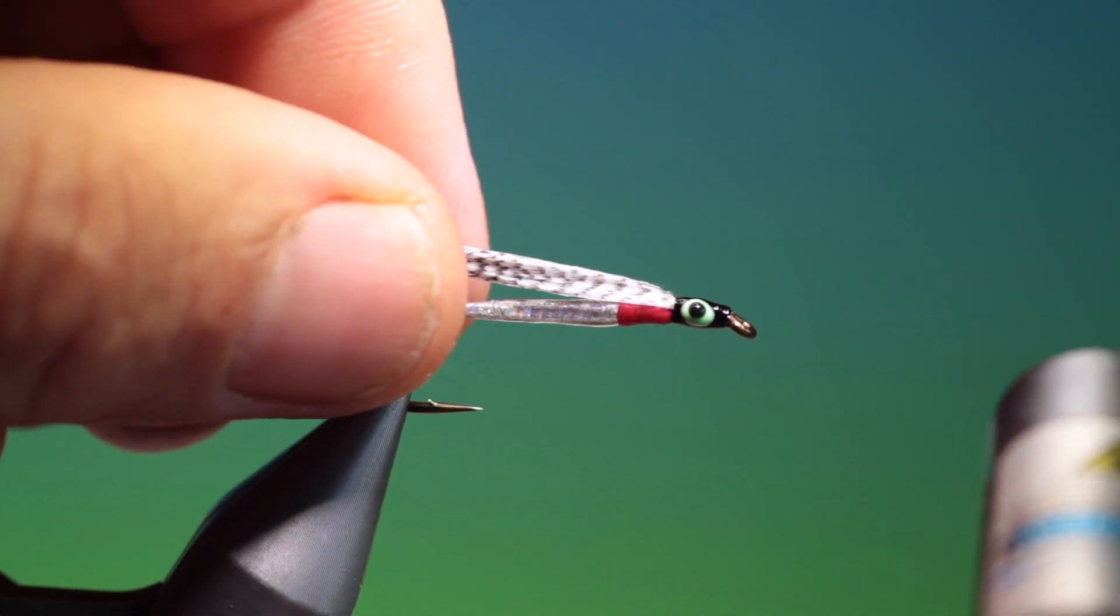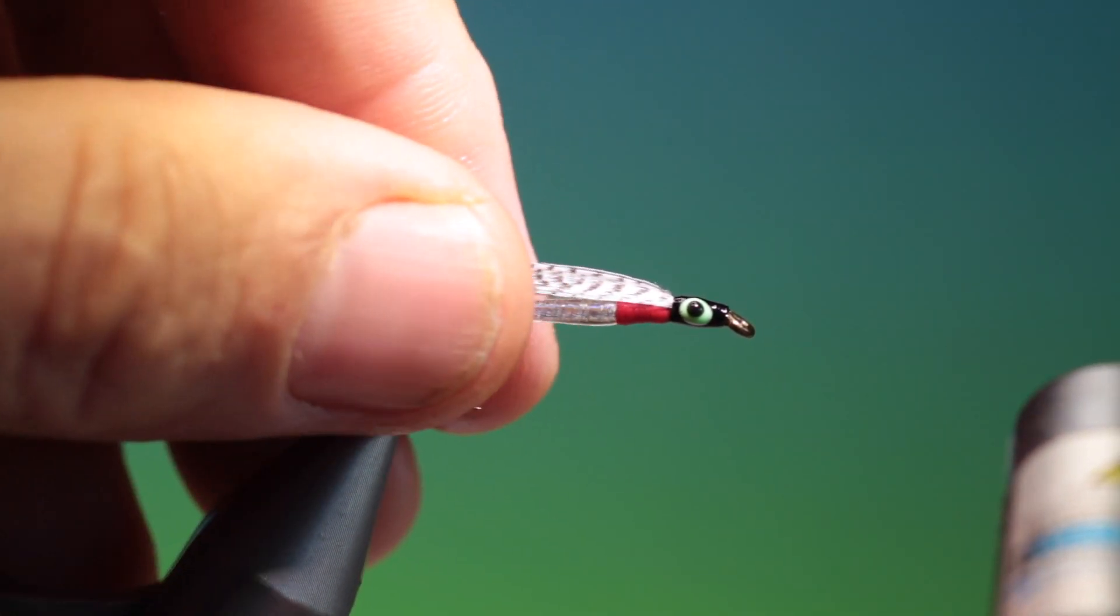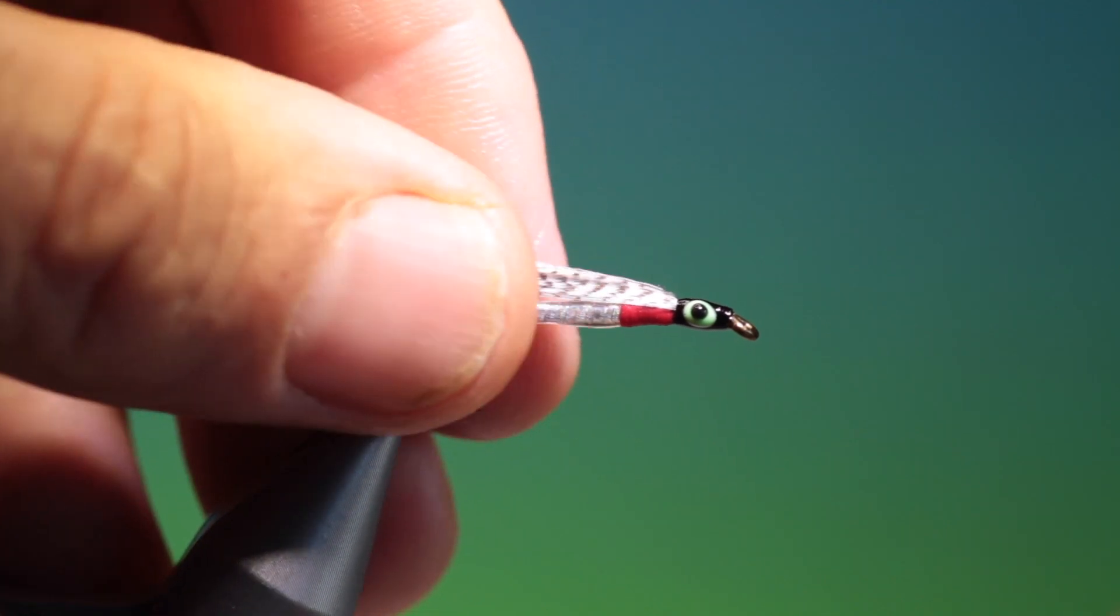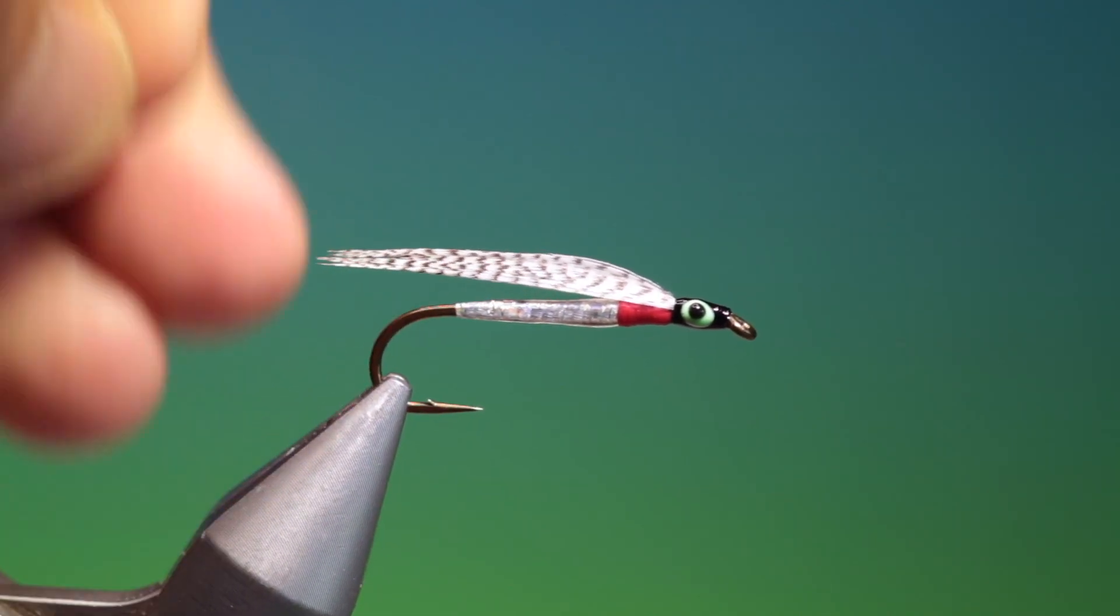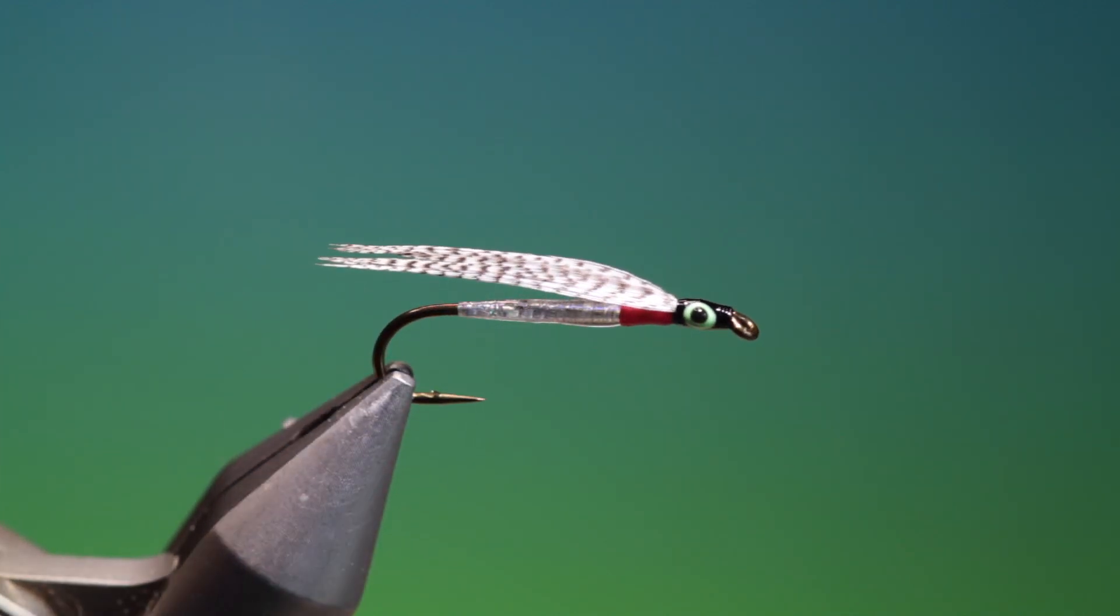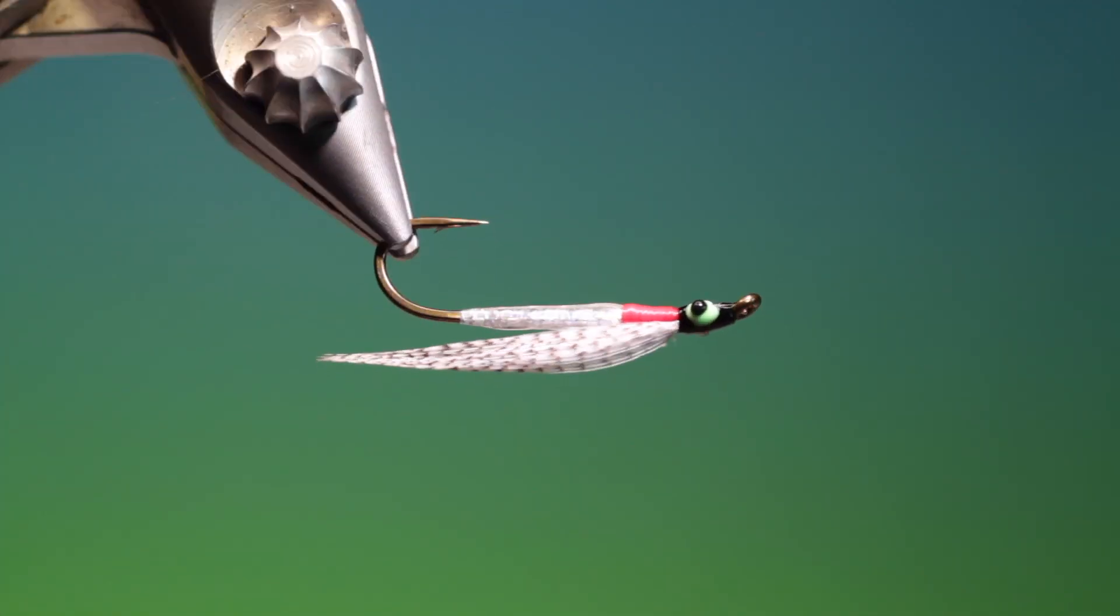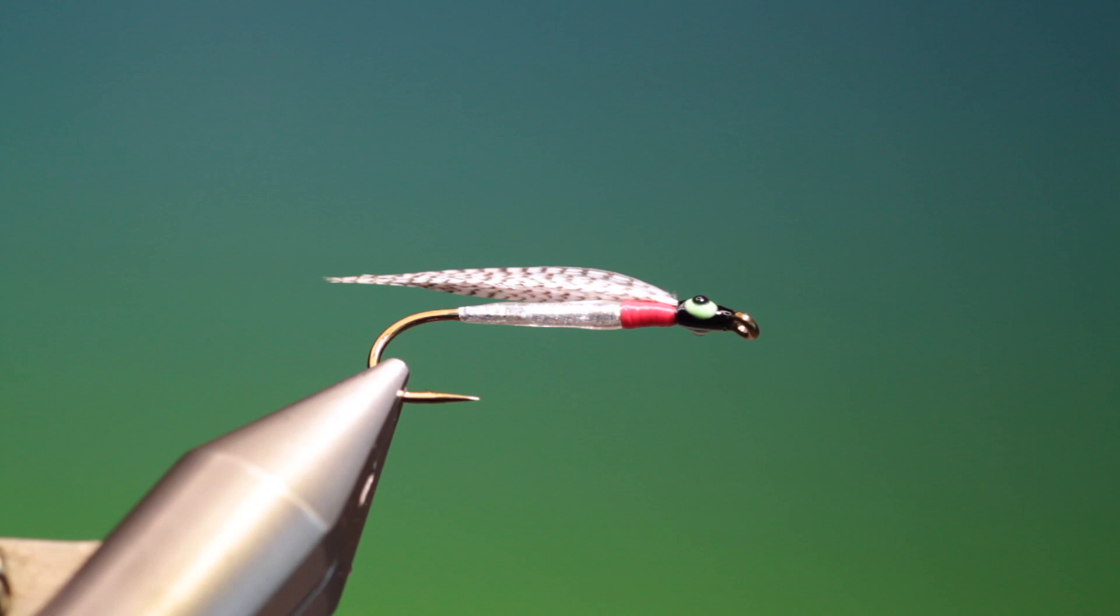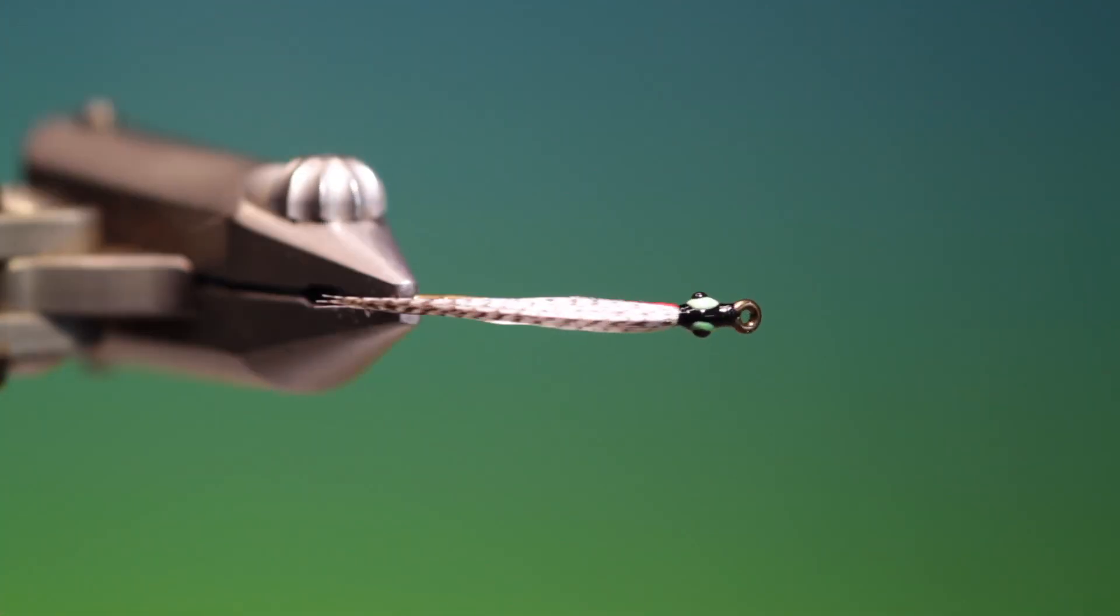Once your wing's been wet it'll stay in position. And it will fall, when fished, it will fall flat just over the body like that. And that's the Sinfoil Fry Heater. Great pattern. Very simple. Very robust. If you enjoy the videos, please like, share, subscribe. And thanks for watching.